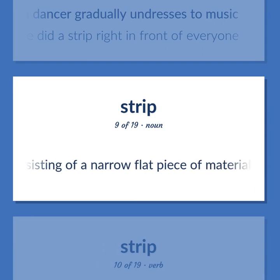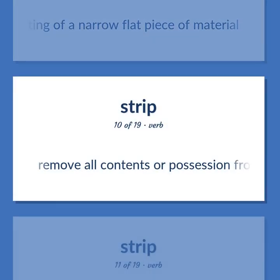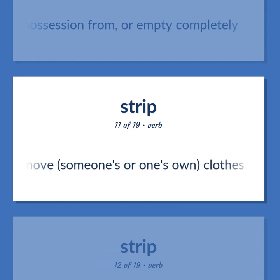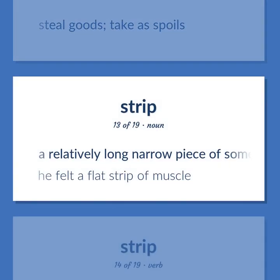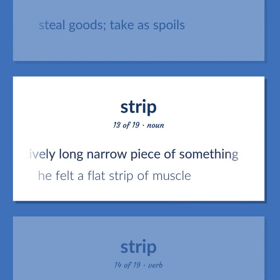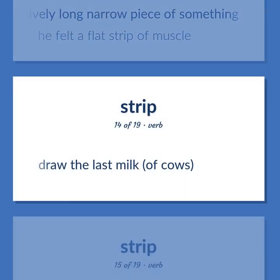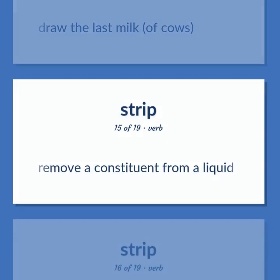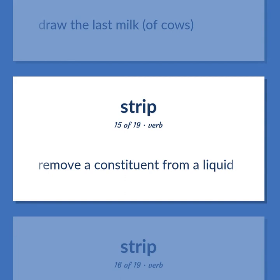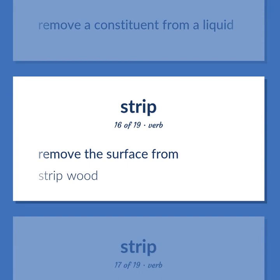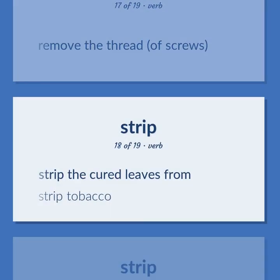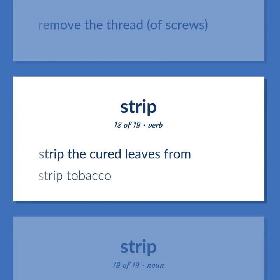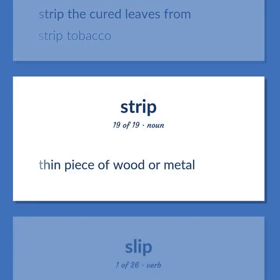Artifact consisting of a narrow flat piece of material. Remove all contents or possessions from, or empty completely. Remove someone's or one's own clothes. Steal goods; take as spoils. A relatively long narrow piece of something. He felt a flat strip of muscle. Draw the last milk of cows. Remove a constituent from a liquid. Remove the surface from. Strip wood. Remove the thread of screws. Strip the cured leaves from. Strip tobacco. Thin piece of wood or metal.